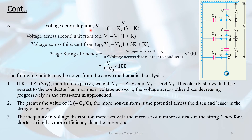Voltage across the top unit V1 equals V divided by (1 + K) into (3 + K). Total voltage V equals V1 into (1 + K) into every factor. For percentage string efficiency: V divided by n into V3, multiplied by 100, where V3 is the voltage across the disk nearest to the conductor.